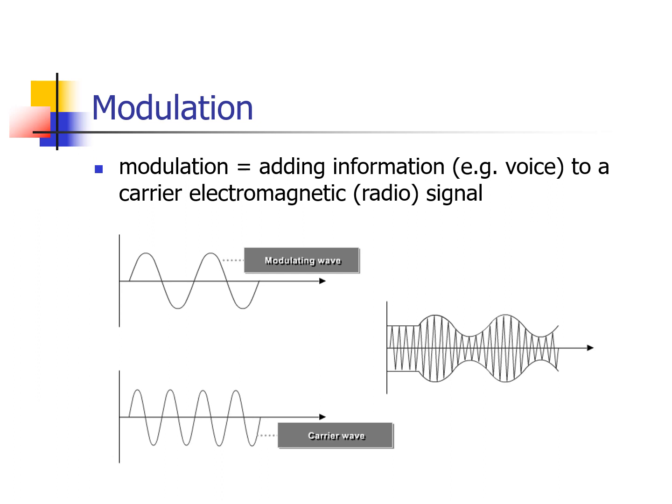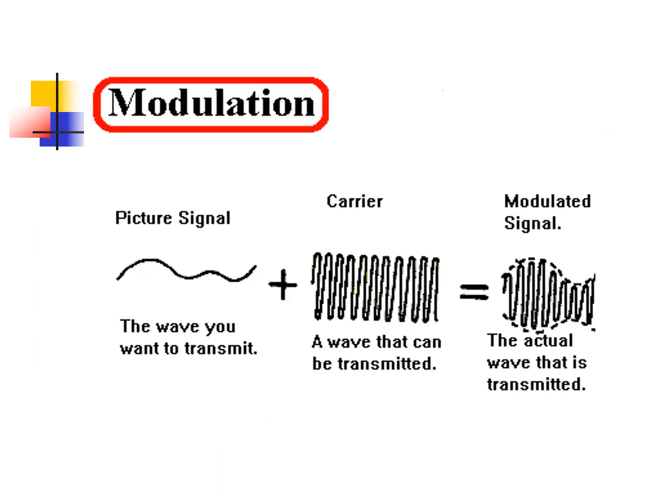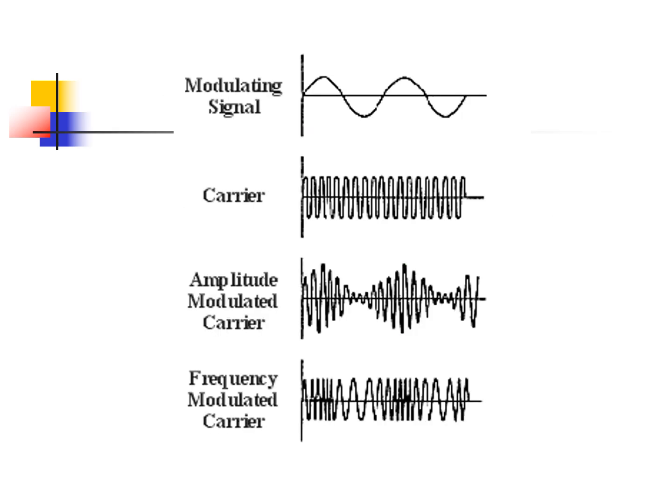The information is packed using a carrier wave in order for it to safely reach the receiver. The illustration shows how modulation takes place. For instance, a picture signal — the wave you want to transmit — is combined with a carrier, a wave that can be transmitted. When you combine the picture signal and the carrier wave, you produce a modulated signal, the actual wave that is transmitted into the atmosphere.